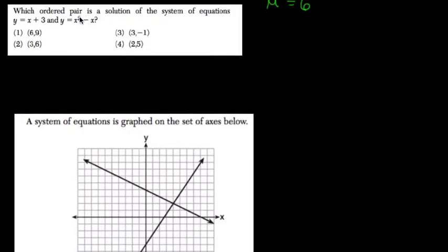Which ordered pairs a solution to the system y equals x plus 3 and y equals x squared minus x? Well, at some point, if they have a common solution, they'll be equal to each other.